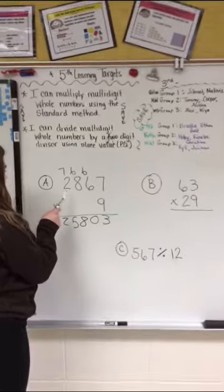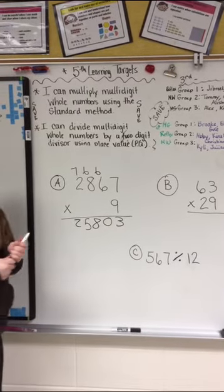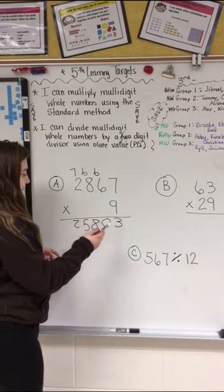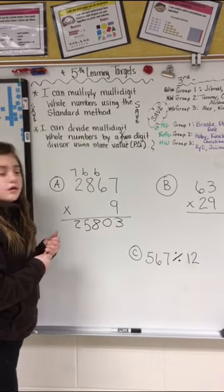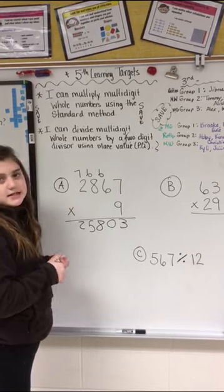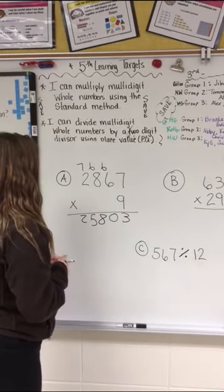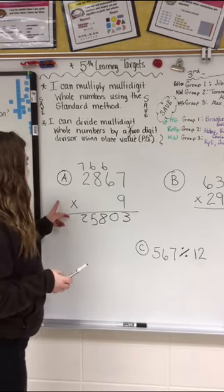And then you would do 9 times 2. So when you did 9 times 7 and got 63, you said you keep the 3. You put your 3 at the bottom. But what are you regrouping? You're regrouping your 6 tens. So that's how you would solve this problem.